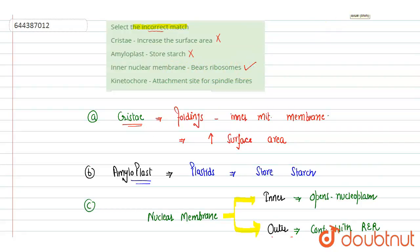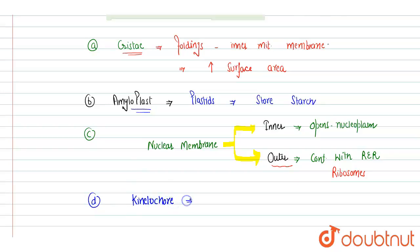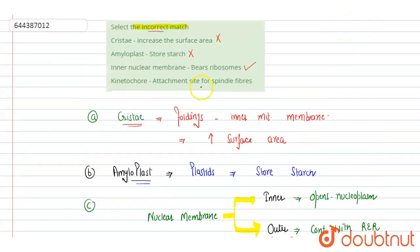The last option is kinetochore. Kinetochore acts as an attachment site for the spindle fiber, and it is used in cell division, where spindle fibers are formed. The option states kinetochore is an attachment site for spindle fiber — this is again a correct match. So option C, inner nuclear membrane bears ribosome, is the incorrect match and the correct answer.